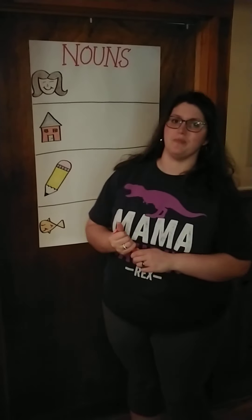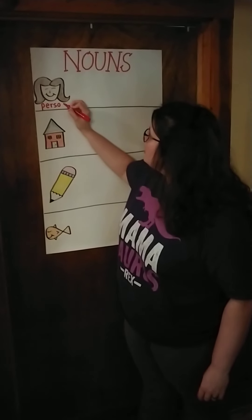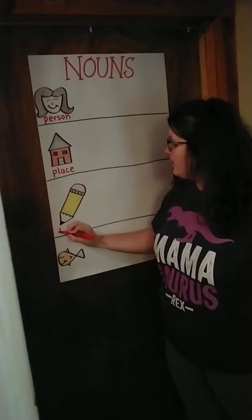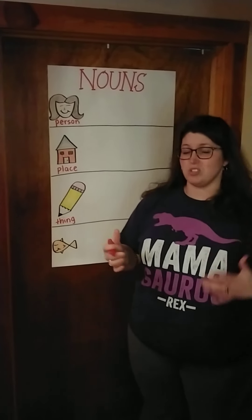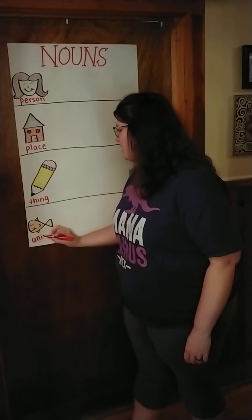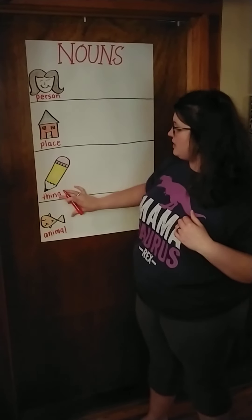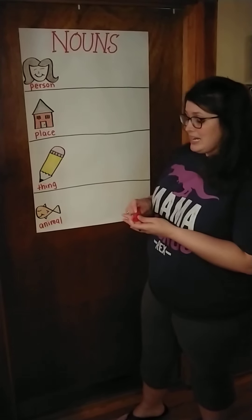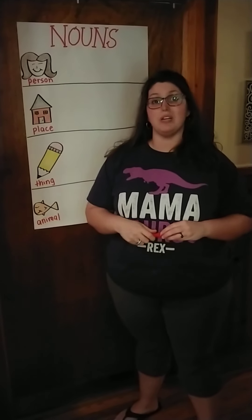I've got some pictures up here in case you're not sure. A noun is a person — I'm going to write person — a place, or a thing. Now, I went ahead and added another category down here because sometimes people include this and I didn't want to leave it out and confuse anybody. So sometimes people will say an animal is also a noun. For our chart, we can do a person, place, thing, or an animal.